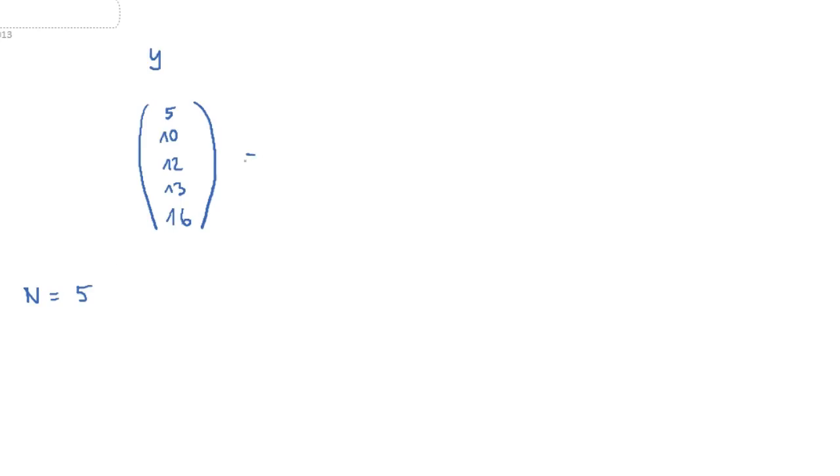Now this is supposed to be beta0 plus beta1 times the values of our explanatory variable. Let's just assume that this is a variable that takes on fairly small values like 1, 2, 4, 6 and 7. And then maybe another one here: beta2 times some other values here. For example 0, but maybe minus 1, minus 4, minus 3 and minus 6 plus the residuals.